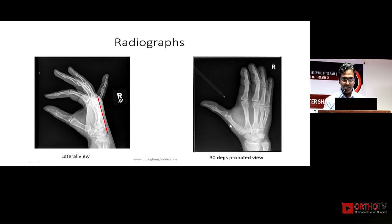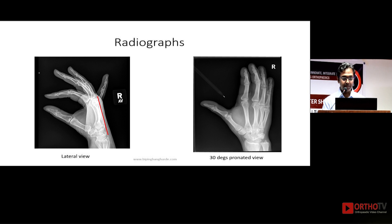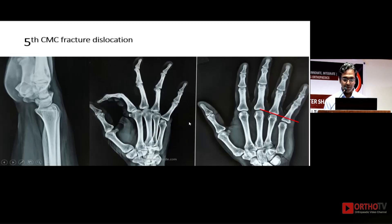Another important view is the lateral view — you have to draw a line along the dorsal part of the third metacarpal and see that all the metacarpals are aligned well. Also important is the 30-degree pronated oblique view.